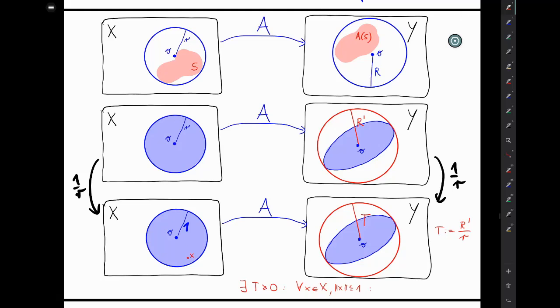So we are talking about all of these points in blue here. The image A of x, which is maybe something in blue over here, is inside that red circle. So its norm is less than or equal to T.